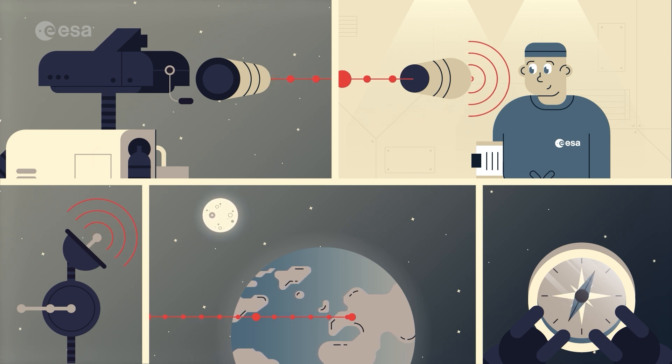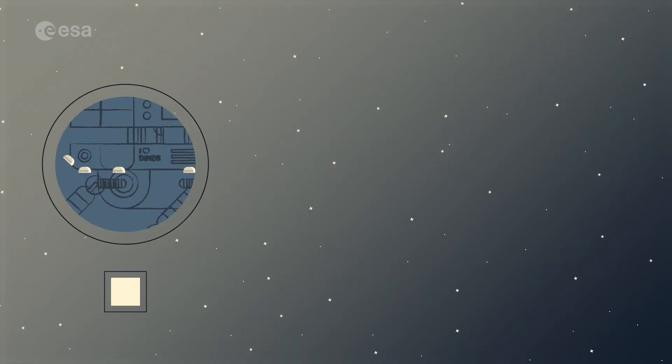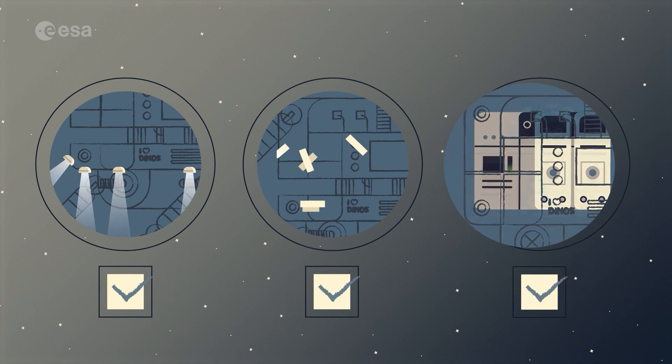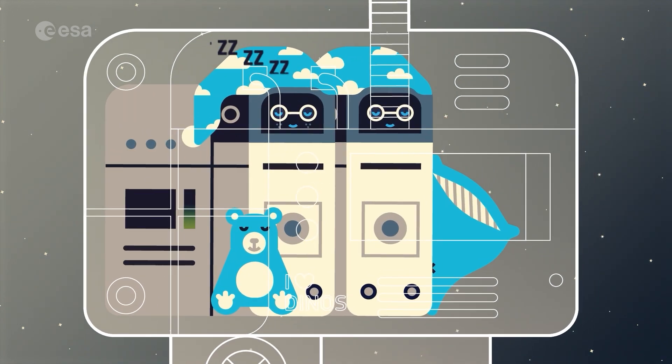HERA uses this antenna to send telemetry reports, so Mission Control knows everything's tickety-boo. Thrusters? Fine. Insulation? Cozy. CubeSats? Still secure and snoozing in low-power mode.